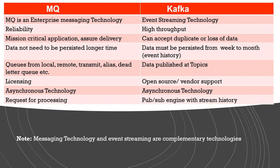So what does high throughput mean? If you have a social media site where in a day you are generating terabytes and petabytes of data, that kind of information if you are going to capture, Kafka is the better option. MQ may not be the right choice, as supporting that volume with MQ and related middleware technology may be a little bit difficult. So better to prefer Kafka.